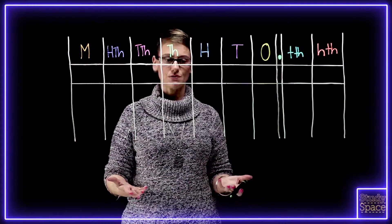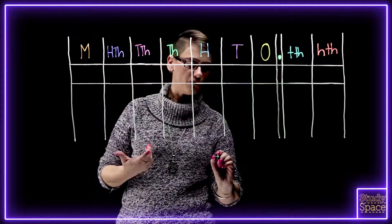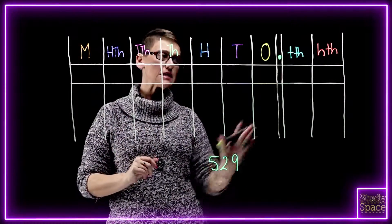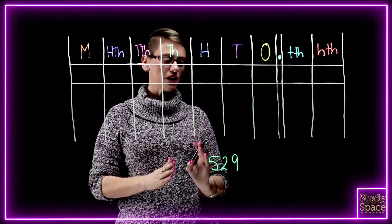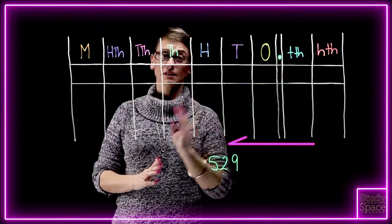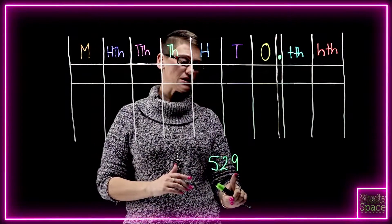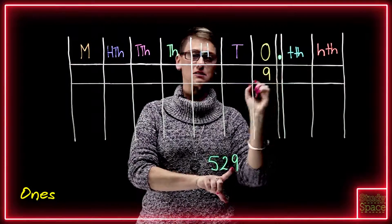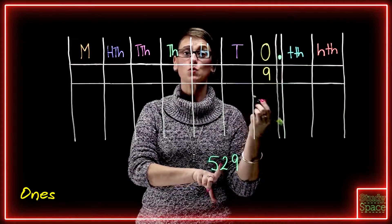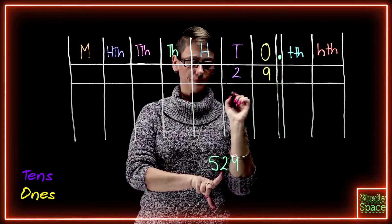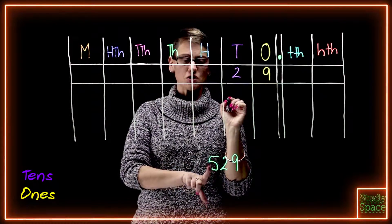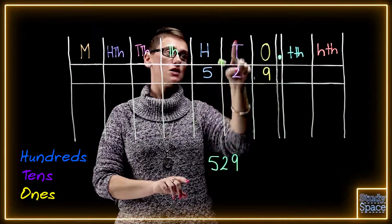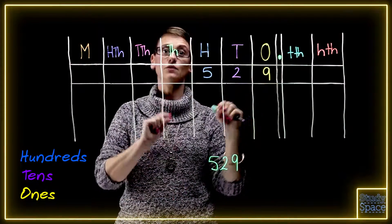So if my number is 529 — I've written it down there. I want to put this into its place values, working right to left. 529 is a whole number, so we start from the ones. We put the nine in the ones column, the two — which is worth 20 — in the tens column, and then the five — which is worth 500 — goes in the hundreds column. So 529.